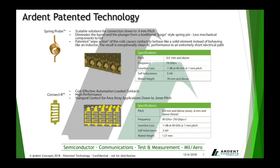We do that utilizing our patented contact sets — our spring probe and our Connectar contact sets. Our spring probe contact set is a scalable solution for connectors down to 0.4 millimeter pitch. It eliminates the barrel and plunger from a traditional pogo-style pin, with less mechanical components to fail. Our patented wipe action of the coils causes the contact to behave like a solid element instead of an inductor, resulting in an exceptionally clean AC performance and an extremely short electrical path. Our Connectar series is a cost-effective, automation-loaded contact for high performance, a stamped contact set for area array applications down to 0.6 millimeter pitch.